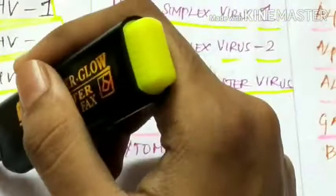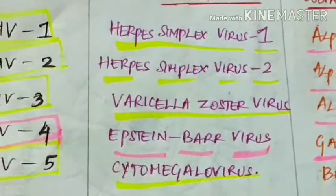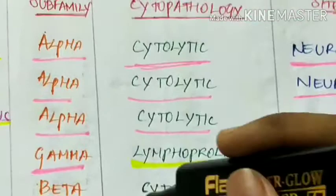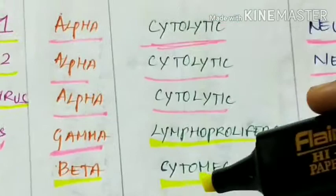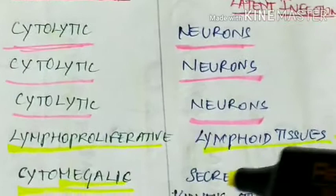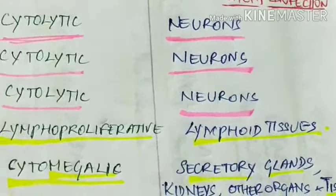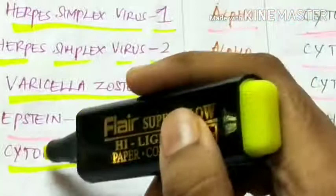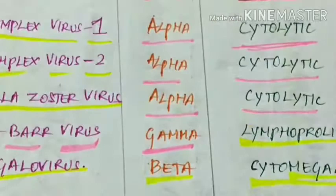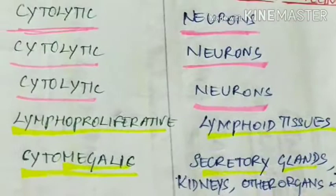Human herpes virus 5, cytomegalovirus, belongs to subfamily beta. Its cytopathology is cytomegalic — it causes an increase in cell size. The site of latent infection is secretory glands, kidneys, and other organs and tissues.